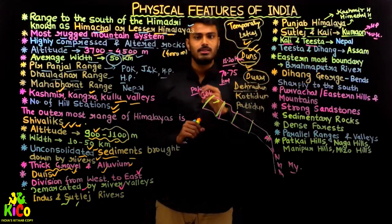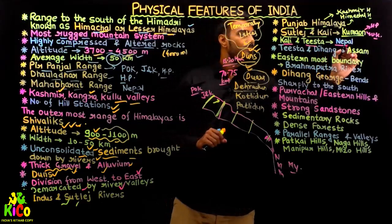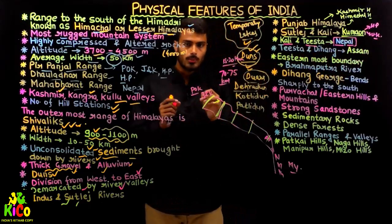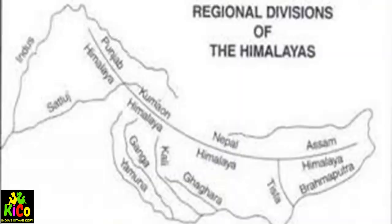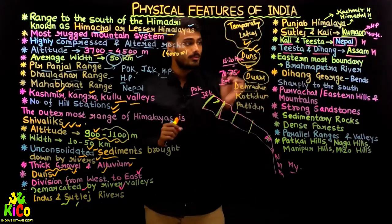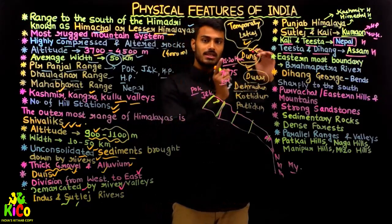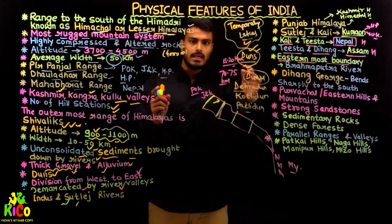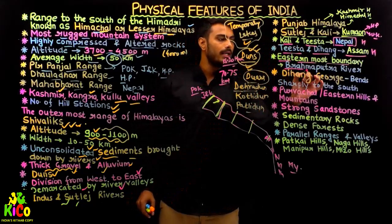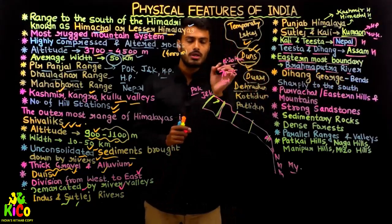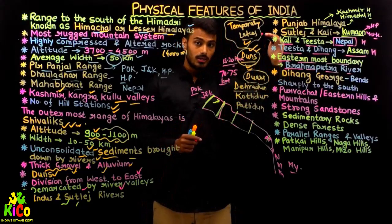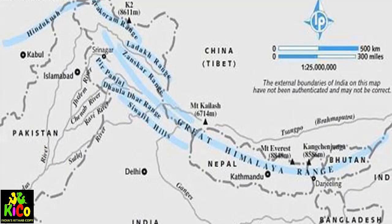Between the Kali and Tista rivers we have the Nepal Himalaya, which covers Nepal's highest peaks and various areas. Then between the Tista and Dihang rivers is the Assam Himalaya. The easternmost boundary of the entire Himalayan mountain range is demarcated by the Brahmaputra river.